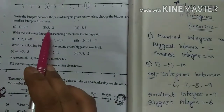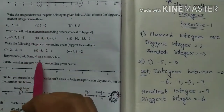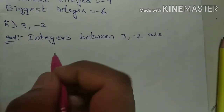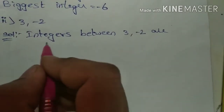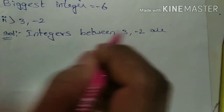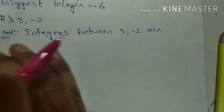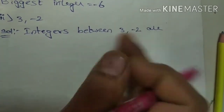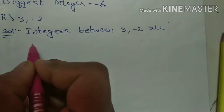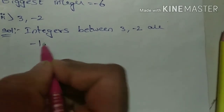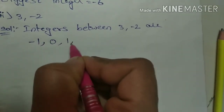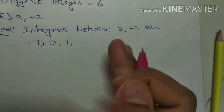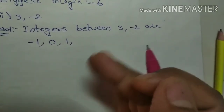Now let us go to the second one: three, minus two. We should write integers in between three and minus two. Negative numbers always come from the left side. So start from minus two — after minus two, which integer will come? Minus one. Okay, after that zero, next one. If we go to the right side it will increase by one.